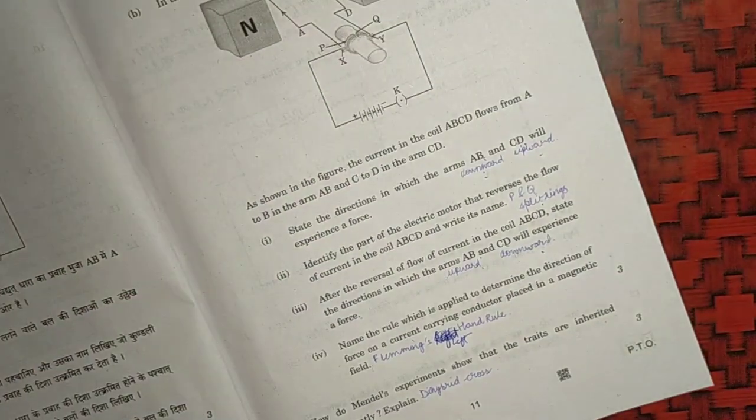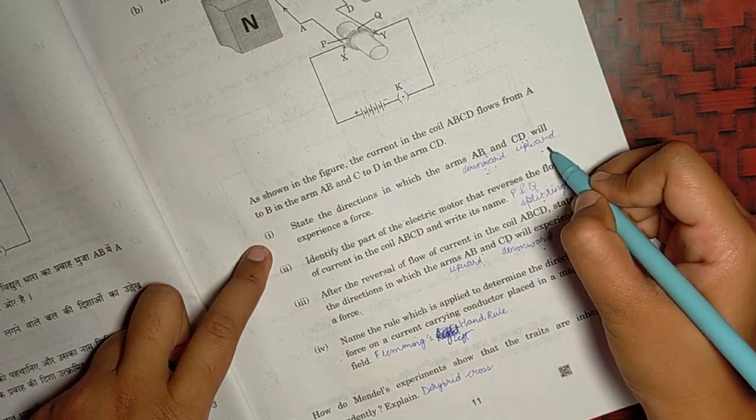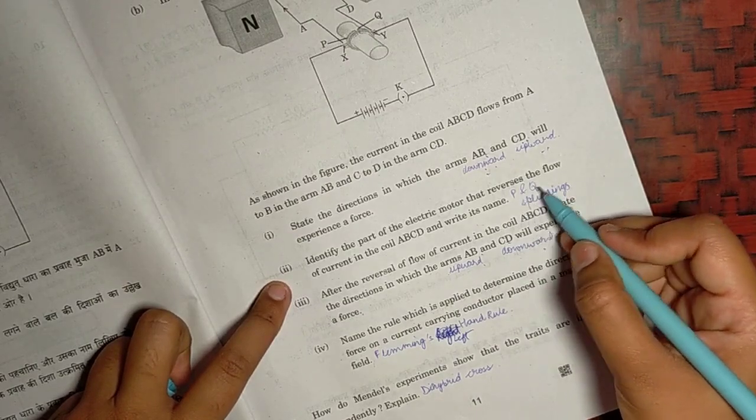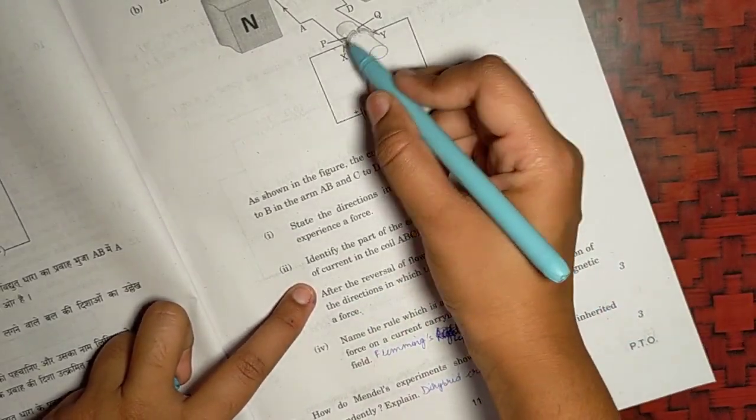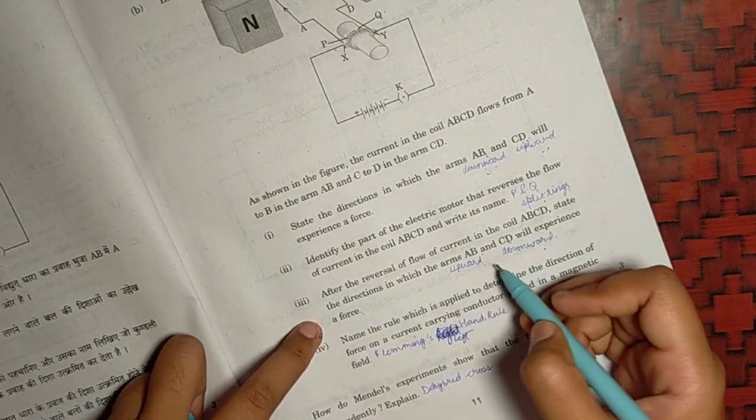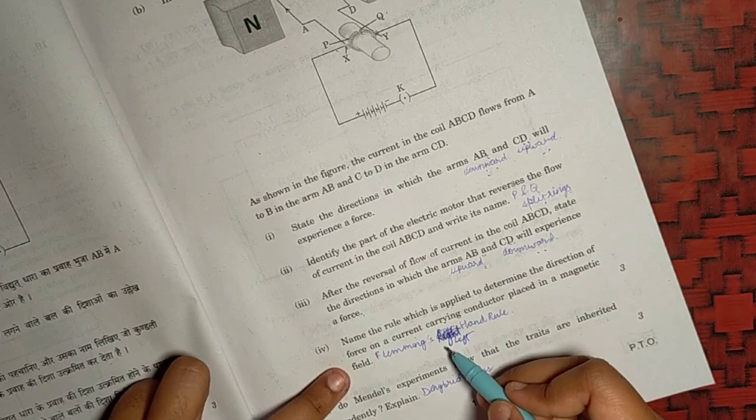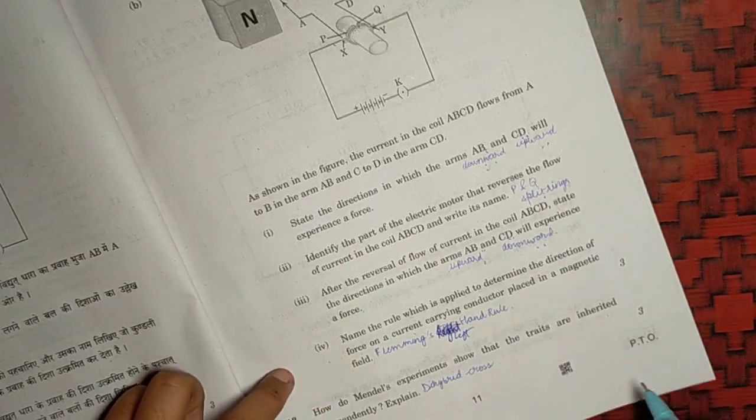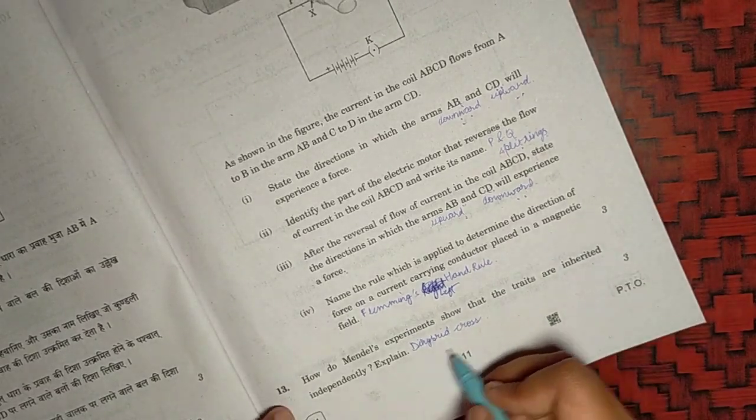For the B part of the question, first one, AB will experience a force downward, CD will experience a force upward with the Fleming's left hand rule. This one, the reversing or the flow of current will be by the split rings which are P and the Q. Third one, AB will experience a force upward, CD will experience it downward. Fourth part, it will be by the Fleming's left hand rule.